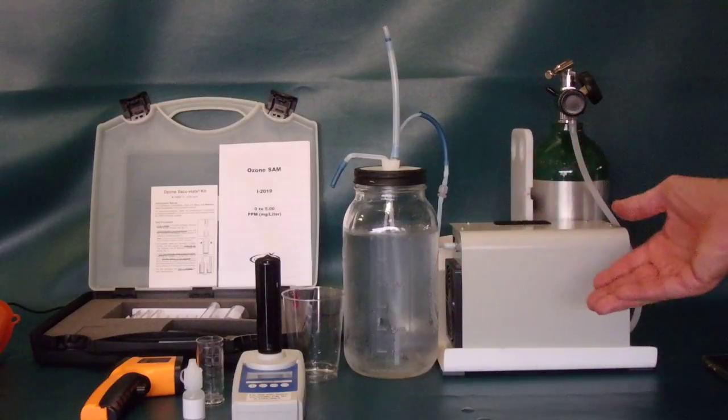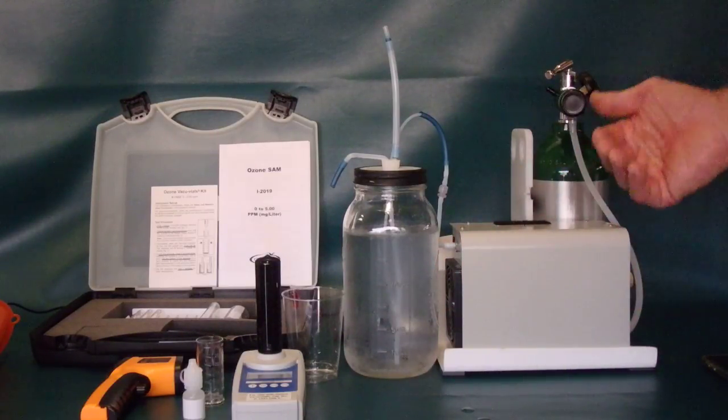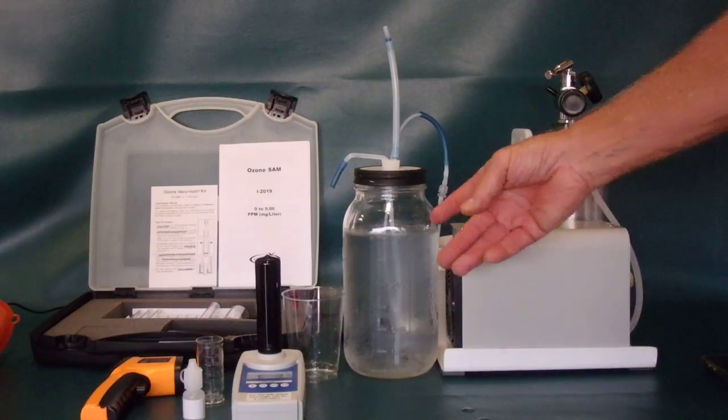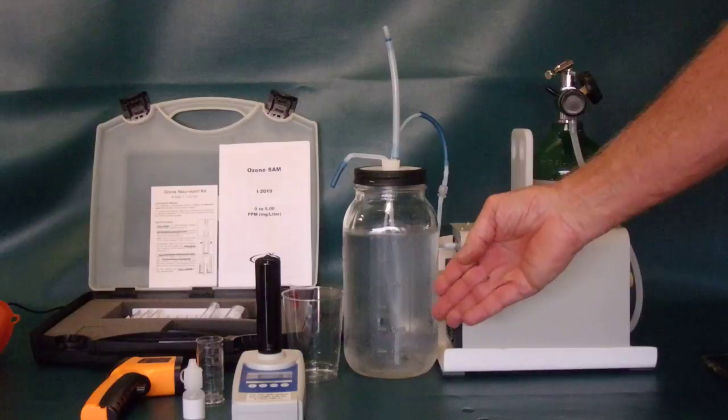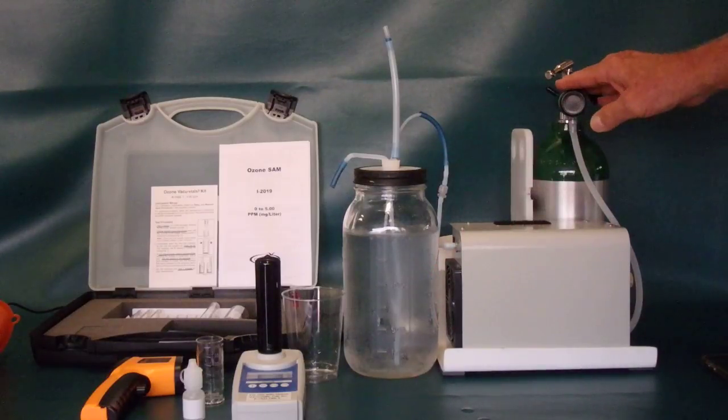And it also is the highest concentration for this system. Using more oxygen is not going to give you a higher concentration, but it will actually give you a lower concentration of ozone in the water. So it's very efficient. It produces highly ozonated water at one thirty-second liter per minute.